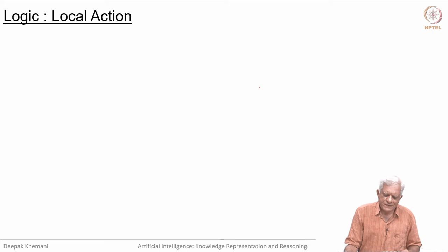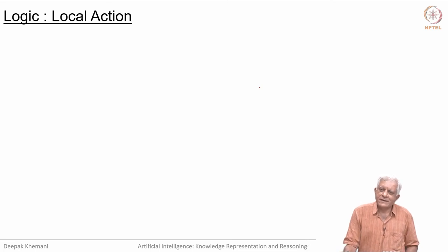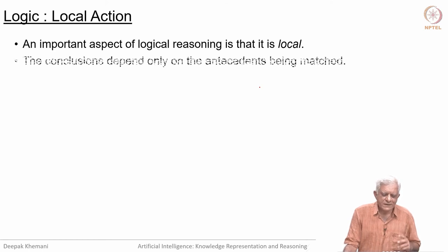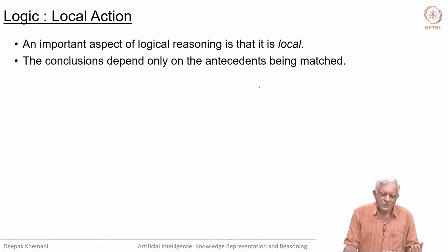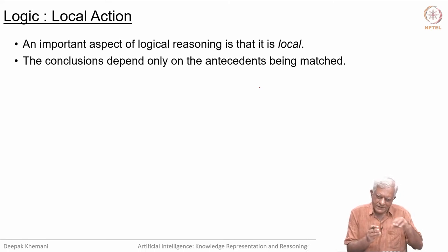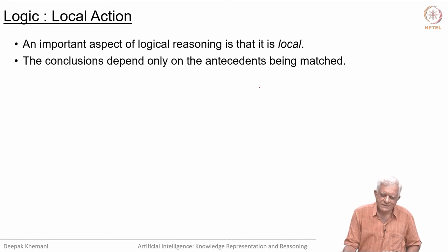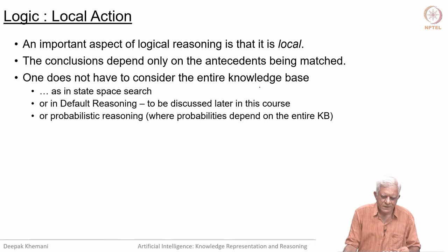One thing about logic is that you may have a large knowledge base, but making inferences is something local—a local action. You do not look at the whole knowledge base to arrive at a conclusion; you only look at a part. Conclusions depend only on the antecedents being matched. If you have a rule and you can find its antecedents in the knowledge base, you can make the conclusion. This locality makes life better from a complexity perspective.